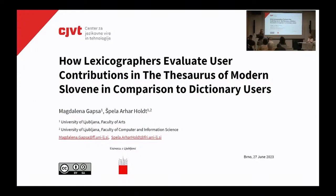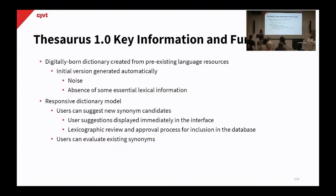Before continuing with the findings, I should summarize some key information about the thesaurus for those who might not be familiar with it. Version 1.0 is digitally born and created from pre-existing resources, meaning initial versions may contain noise — errors, irrelevant information — and sometimes lack vital information like sense disambiguation or part-of-speech tagging. Therefore, the thesaurus is based on a responsive dictionary model that includes users in its development. Users can suggest their own synonym candidates, which are displayed immediately in the interface but are pending lexicographic improvement.